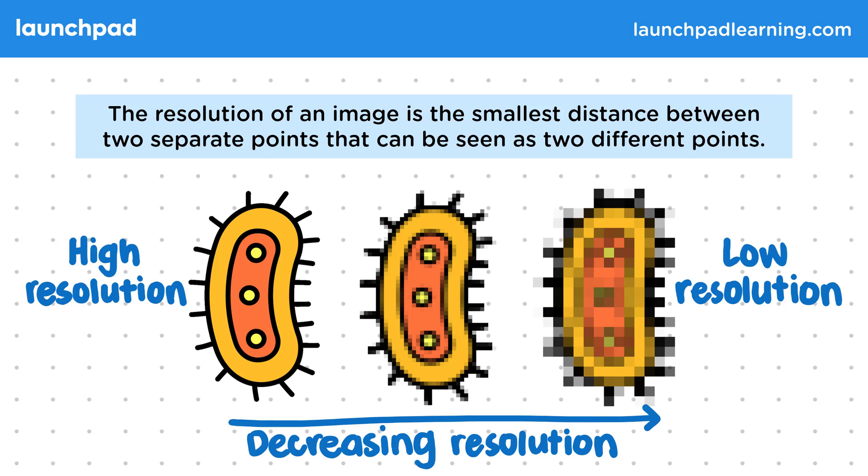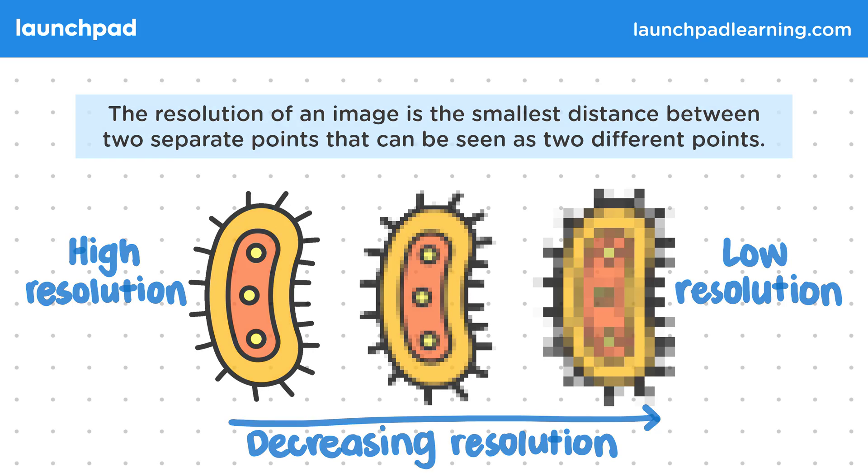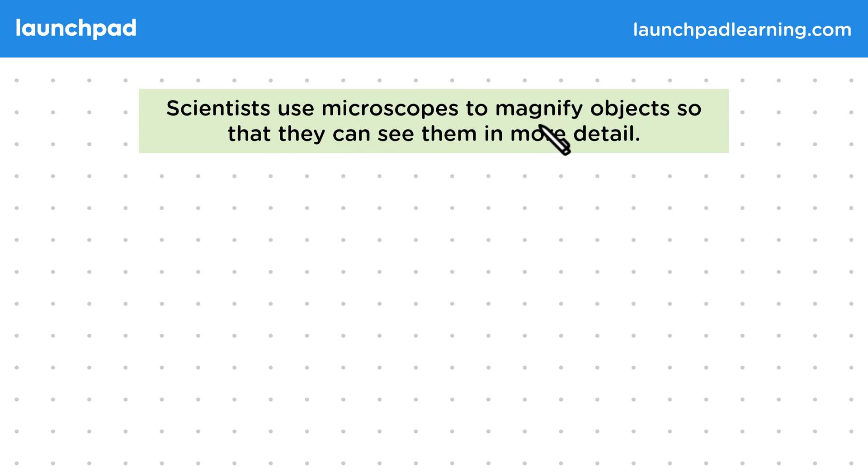You need to be able to explain the difference between magnification and resolution. So if we do want to look at cells like these in more detail, what equipment can we use? Scientists use microscopes to magnify objects so that they can see them in more detail. These objects could be cells or tissue samples, small insects, basically anything that's difficult to look at in detail without the use of special tools.